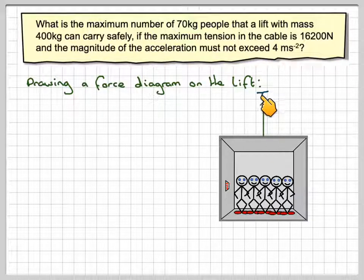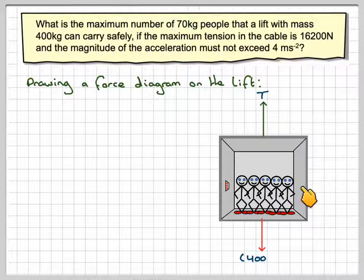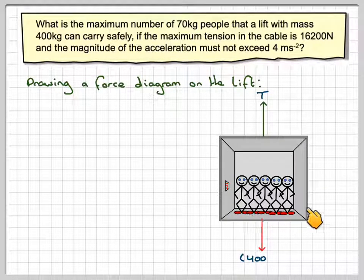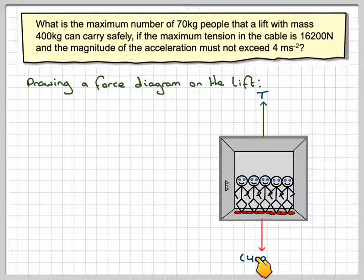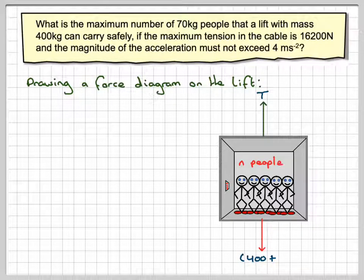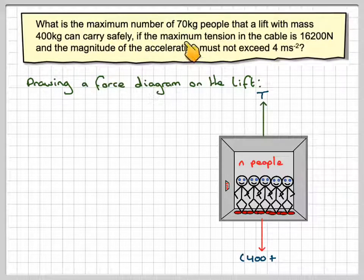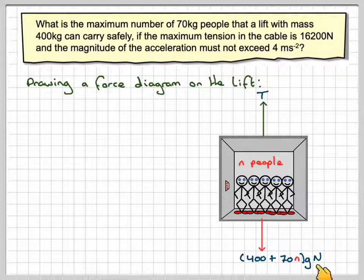We've got the tension going upwards and then we've got the weight. So we're going to have the weight of the lift which is going to be 400 plus, now if there are N people and each one of them weighs 70 kilograms, then we're going to have 70N for the mass and to make that weight we need to multiply it by G.